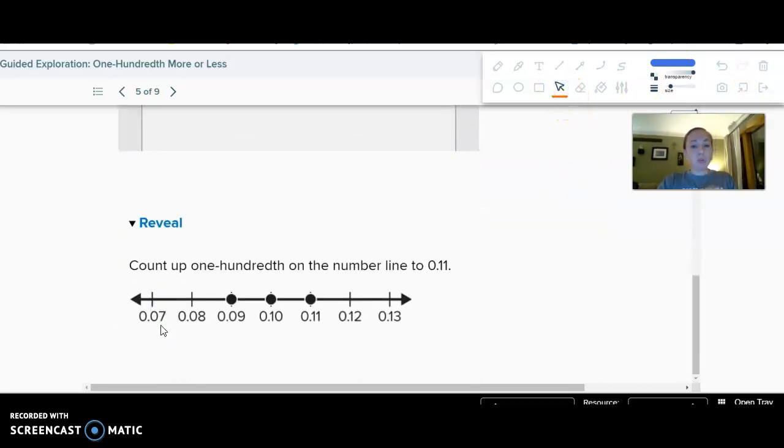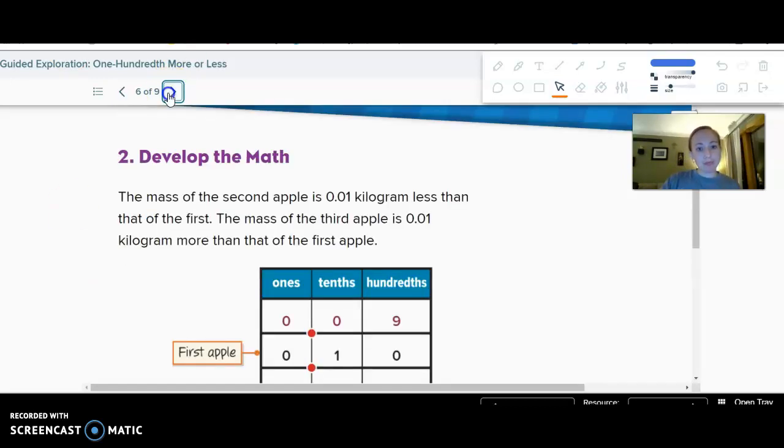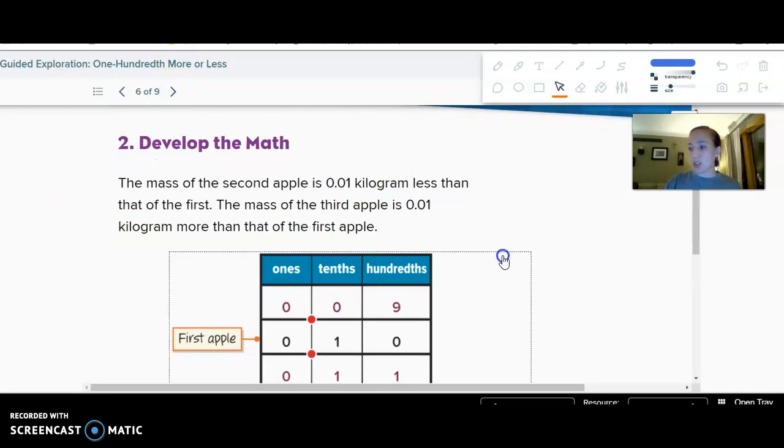Count up to eleven-hundredths. And again, our number line is counting by hundredths, so that way we don't have to skip any numbers. Another way to do it, just like before, we can think in terms of place value.